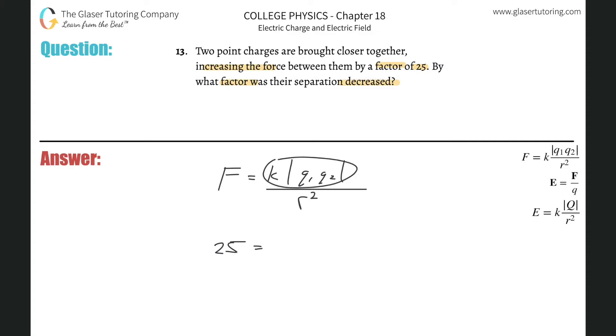And k, this is all constant in the numerator, so literally put one in its place and then divide it by - now we're trying to find what happens to the distance, right? So put r squared, solve this thing for r squared.